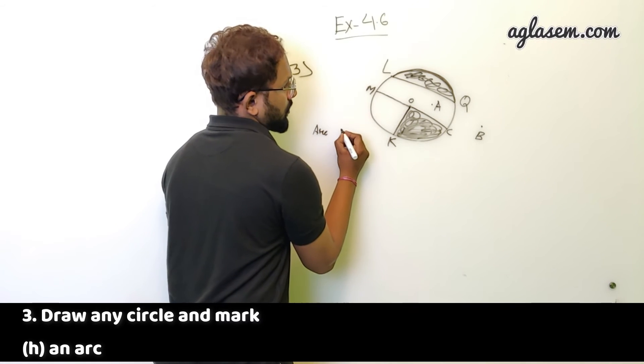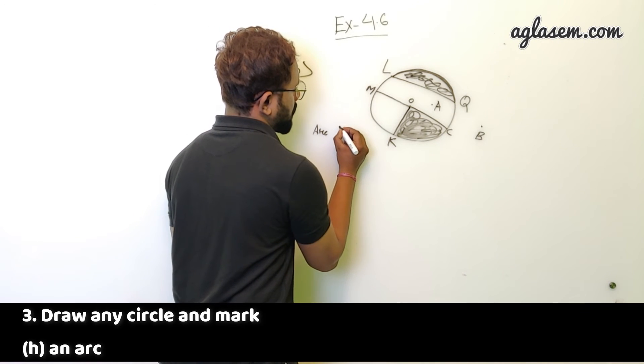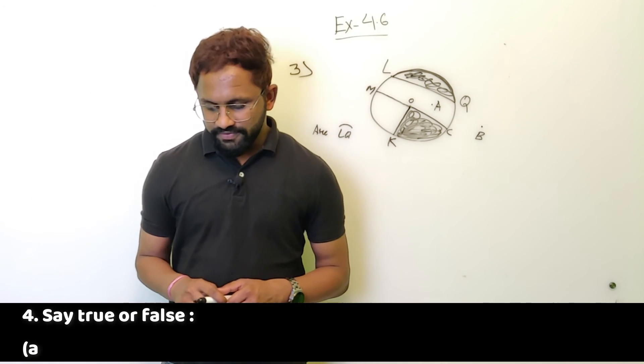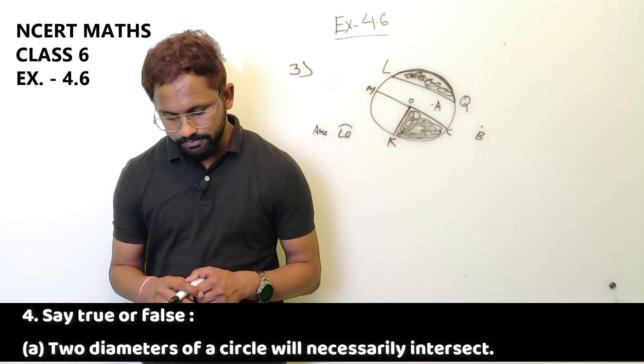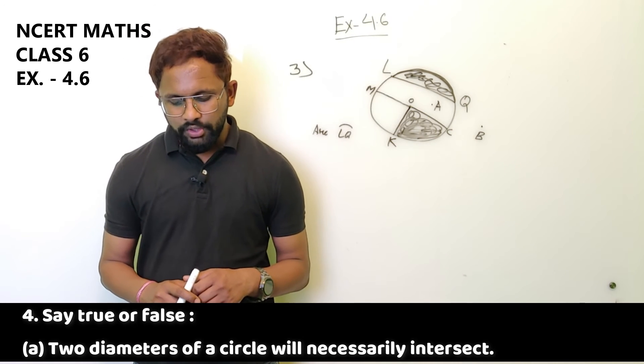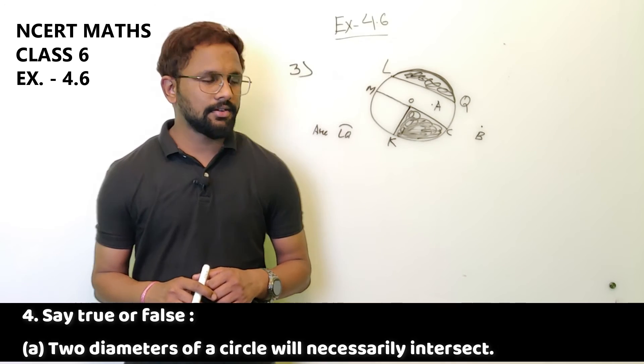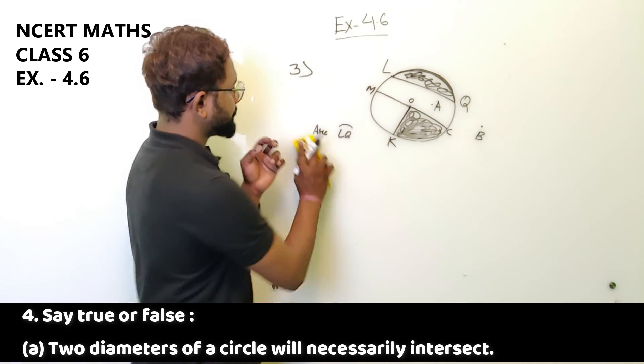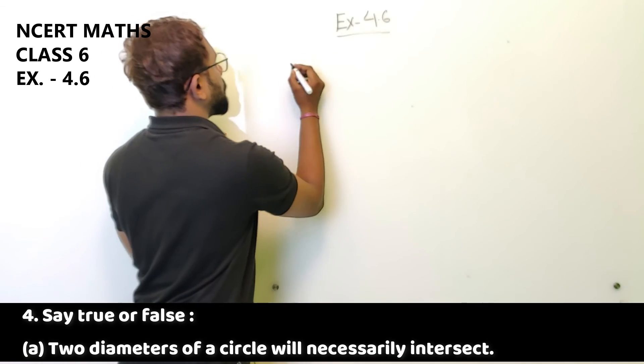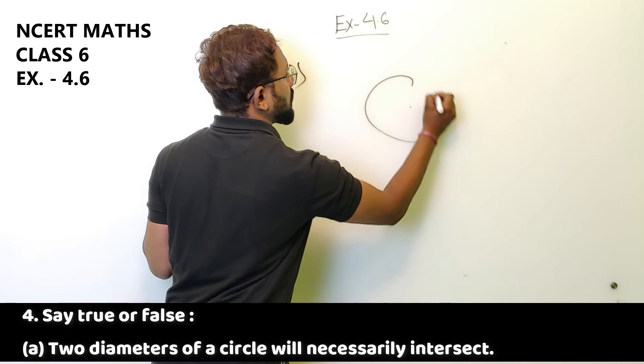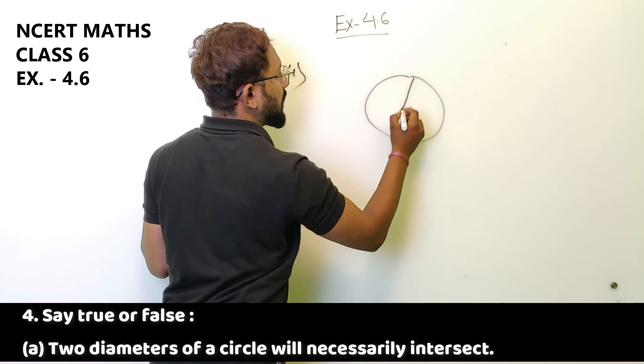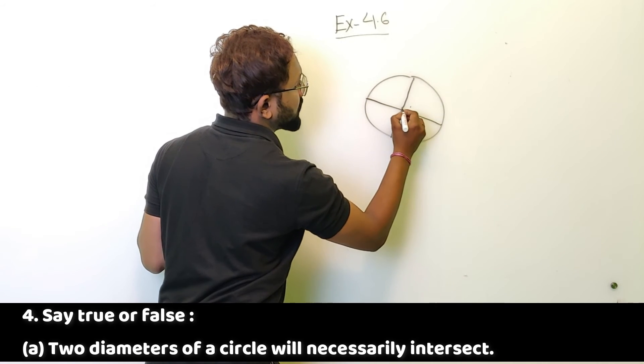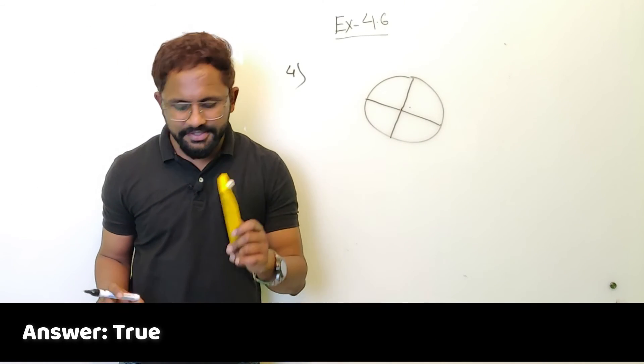Final question, fourth question. Say true or false. Two diameters of a circle will necessarily intersect. Let me draw it again. Fourth question, circle. This is one diameter, this is another diameter. They are always intersecting. So the first statement is true.